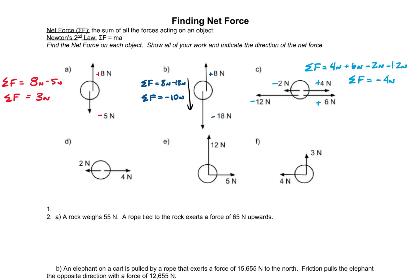For part D, we're going to make the force to the right positive and the force to the left negative. That gives us 4 newtons minus 2 newtons, so the net force comes out to be 2 newtons, and it points to the right because it's positive.